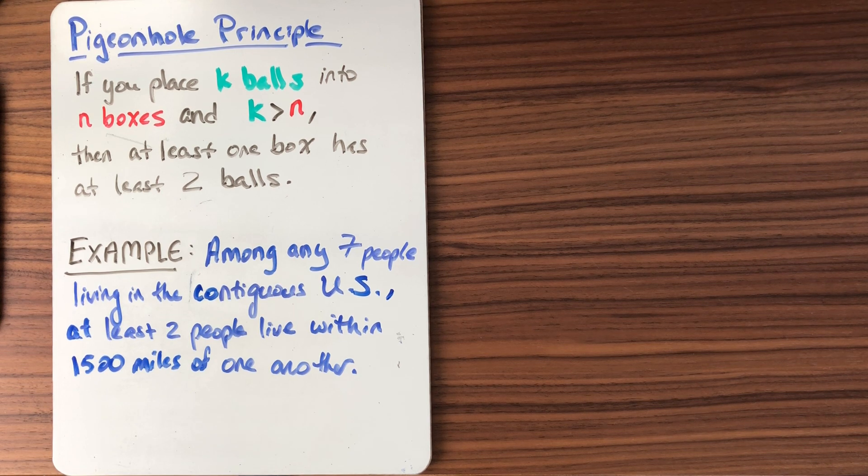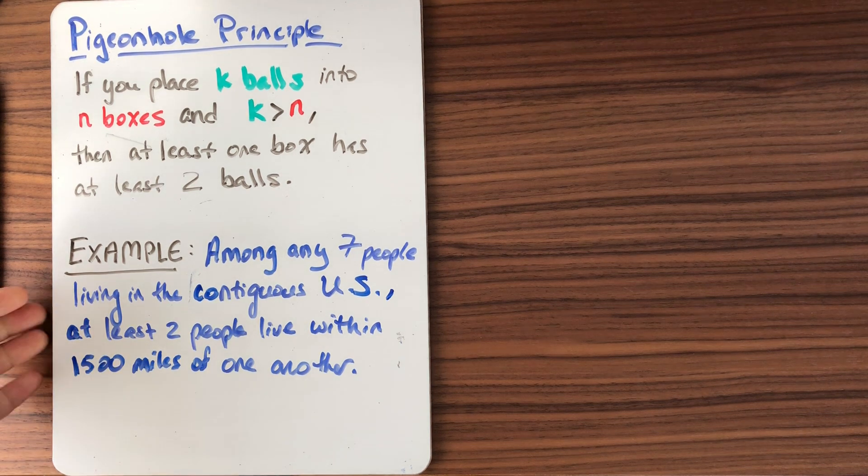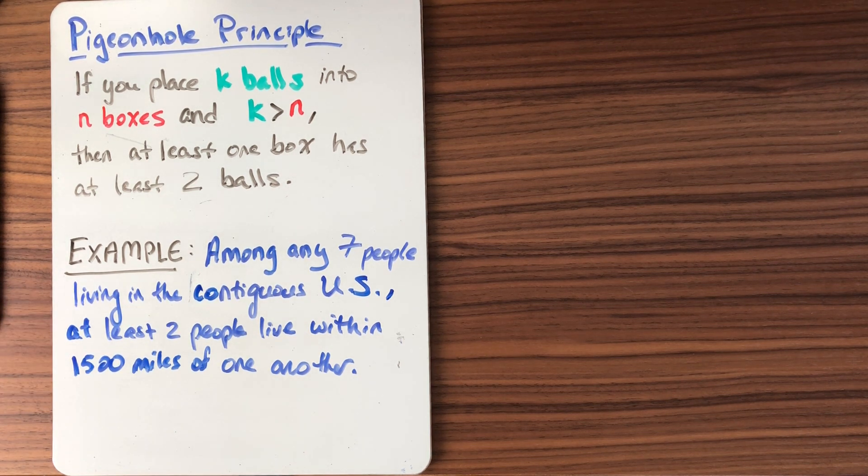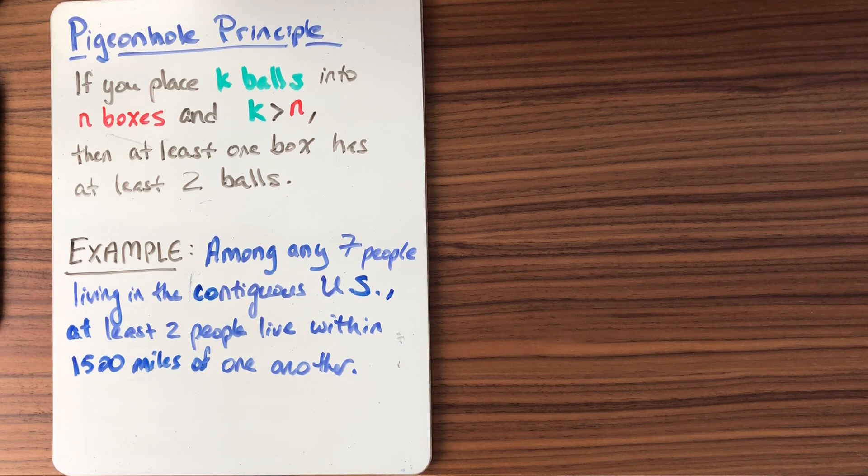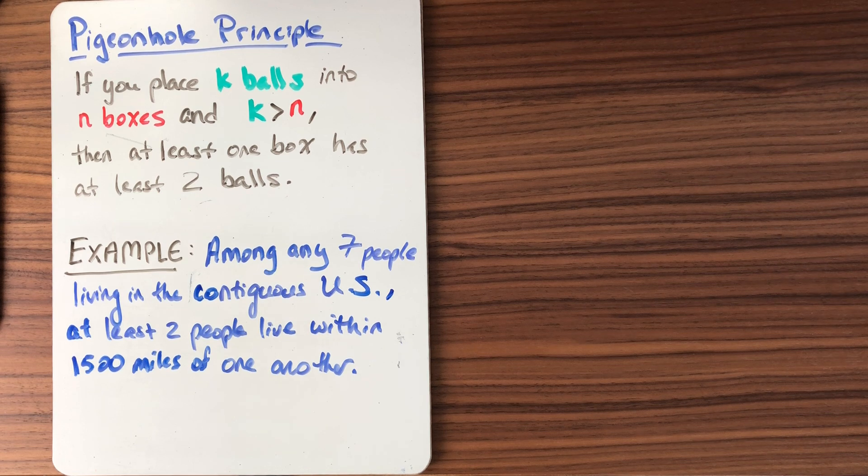Now let's see how we can recognize when that statement will be useful in solving a problem. Here's our example. Among any seven people living in the contiguous United States, at least two people live within 1500 miles of one another. A lot of statements that come down to the pigeonhole principle seem outrageous, seem like they can't possibly be true, and then they're true for a very obvious reason, which is the pigeonhole principle.